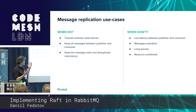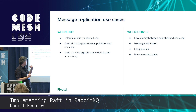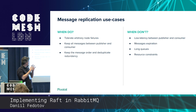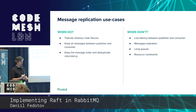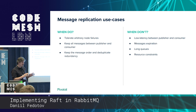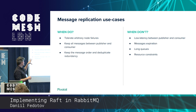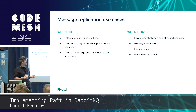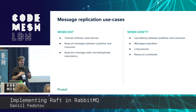We do have message replication right now in RabbitMQ, and we're just improving it. If you want to tolerate arbitrary node failures, preserve message order, and keep all messages safe — that's the use case for message replication. Otherwise you'd better not do that. There are better ways to route messages. For low latency scenarios it doesn't make sense, for messages with expiration it doesn't make sense, and there are certain resource constraints in memory and disk.